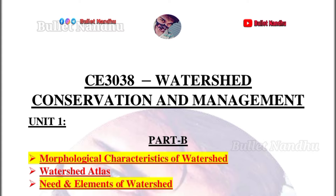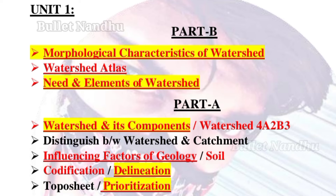Unit I and Unit Part B is very important. Morphological characteristics of watershed — very important, sometimes this is the subject. Watershed atlas is very important — first preference. Need and elements of watershed — very important. Unit Part A: watershed and its components — very important.